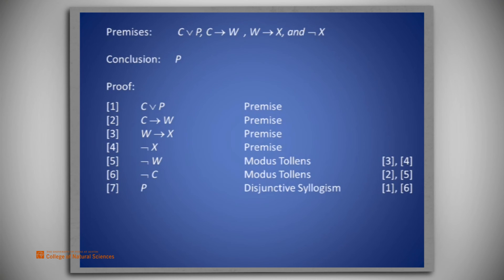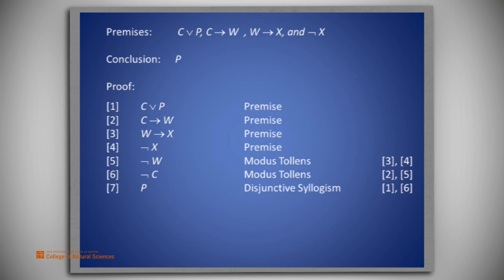Not only did our discovery of the proof move in a backwards fashion, the actual presentation of the proof also proceeds backwards. When we have a sequence of implications, we can often chain through them in a forward fashion using modus ponens. Sometimes, however, we move backwards using modus tollens. This proof is an example of that approach.